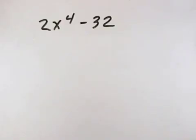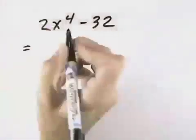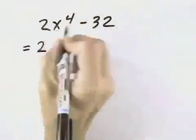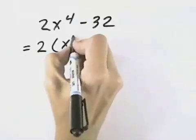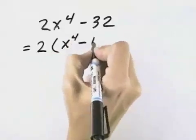In order to factor this problem completely, we'll first take out the greatest common factor. Looking at these two numbers, we can see they're both even, so they have a greatest common factor of 2. Dividing out the 2 leaves x to the 4th minus 16.